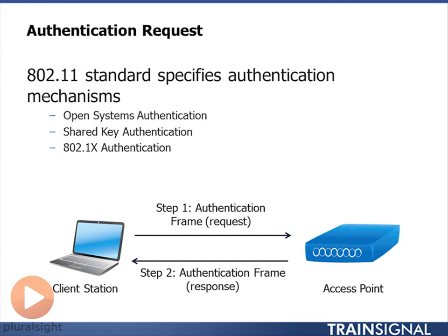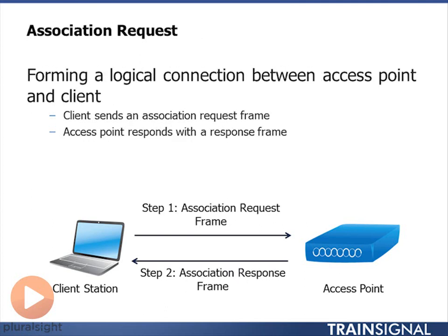Once you've done the 802.11 authentication, you need to go on and associate. Association is forming a logical connection between the client and the access point. When I send in an association request frame, I'm also telling the access point about myself — for instance, what data rates I can support, whether I support quality of service, and if I'm 802.11n, how many MIMO antennas I support.